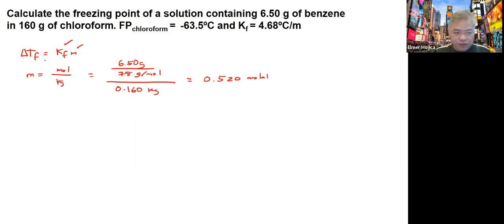So what we're going to do is to get the delta TF. We multiply 4.68 degrees Celsius per molar times 0.520 molar, giving us a delta TF that is around 2.43.